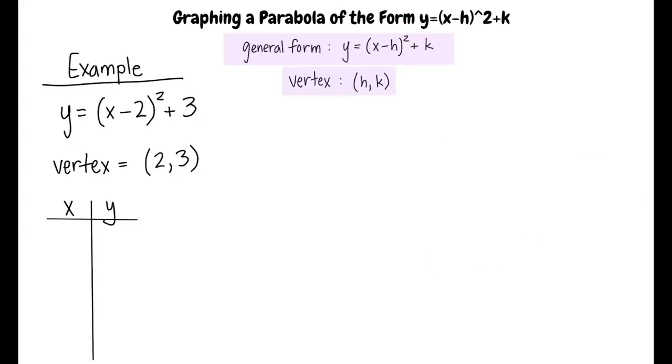Once you have determined the vertex, you will need to determine two more points that lie on the left side of the vertex and two more points that lie on the right side of the vertex. This is a total of five points that you must determine before graphing when using an ALEKS graphing calculator.